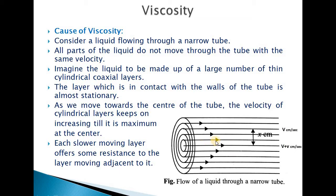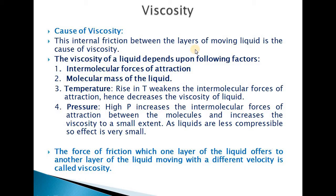Each lower layer having less velocity offers some resistance to the adjacent faster-moving layer, retarding its motion — this is responsible for the internal resistance of the liquid. For example, if one layer has velocity v cm/s, the adjacent layer at a distance x cm toward the center has velocity v + dv cm/s. This internal friction between the layers of moving liquid is the cause of viscosity.